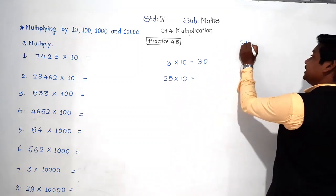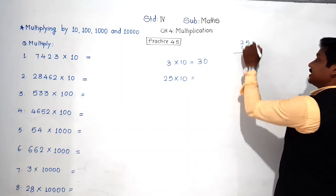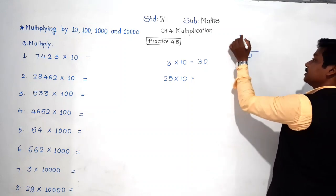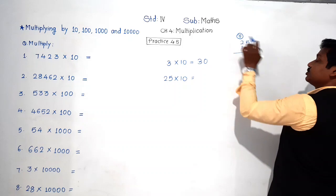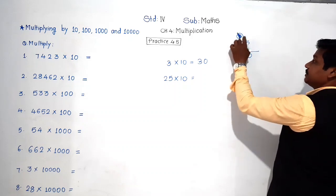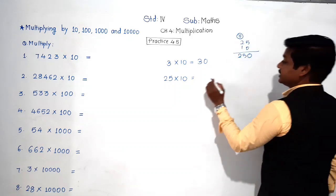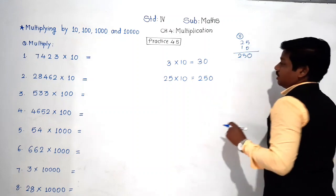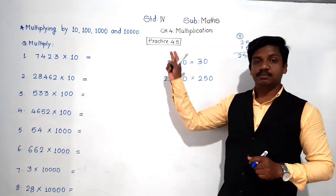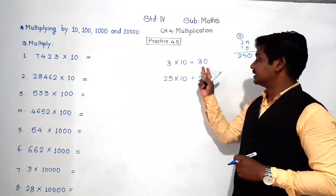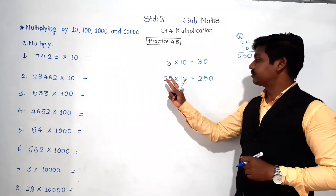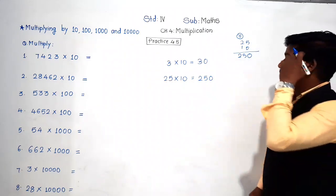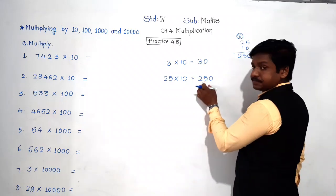Let's multiply 25 by 10 traditionally: ten fives are fifty, write zero carry five; ten twos are twenty, plus two is twenty-two — so the answer is 250. Now observe both examples: 3 into 10 is 30, and 25 into 10 is 250. Observe the answers carefully.